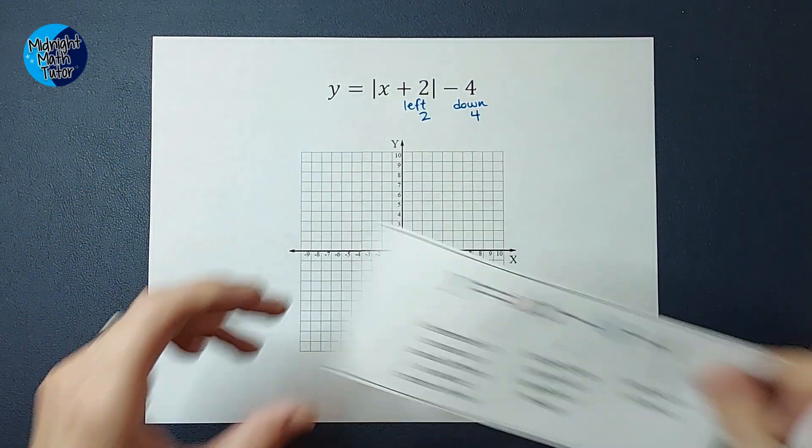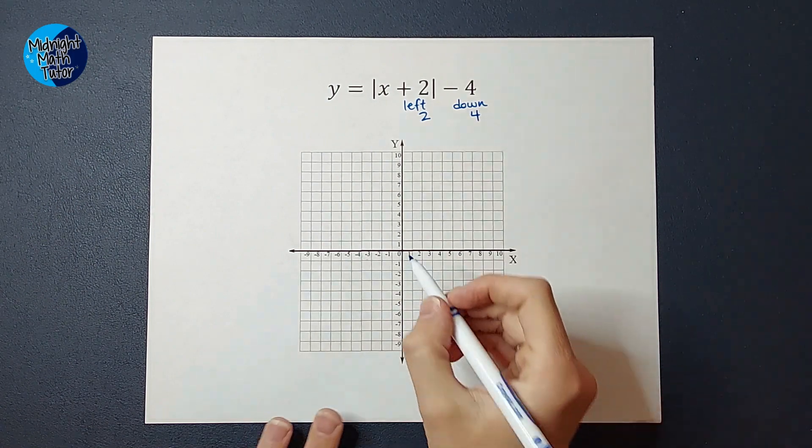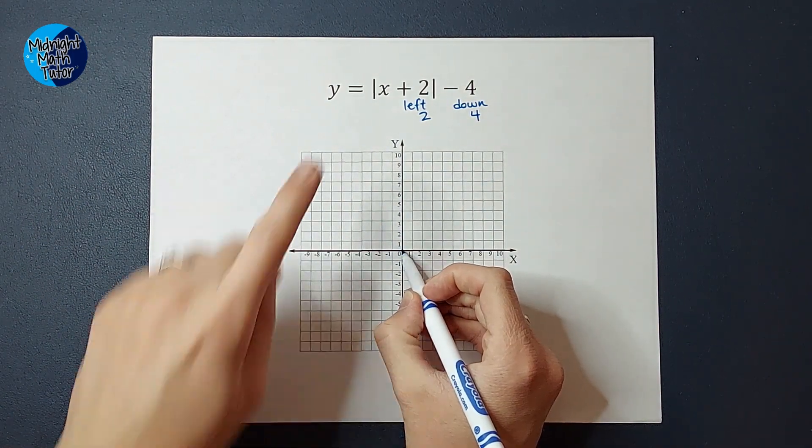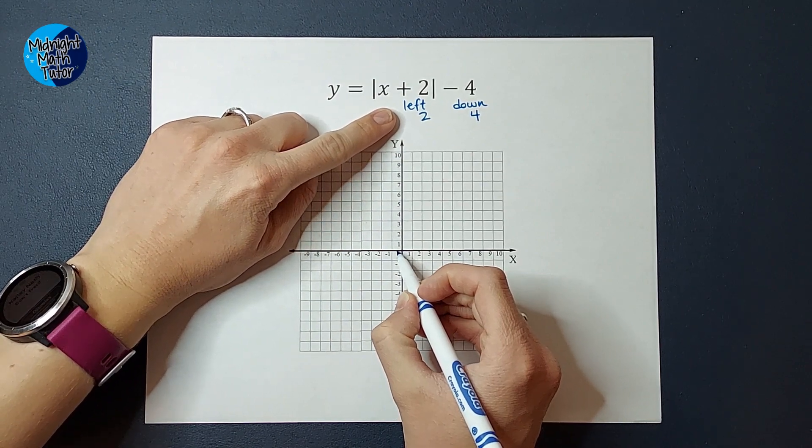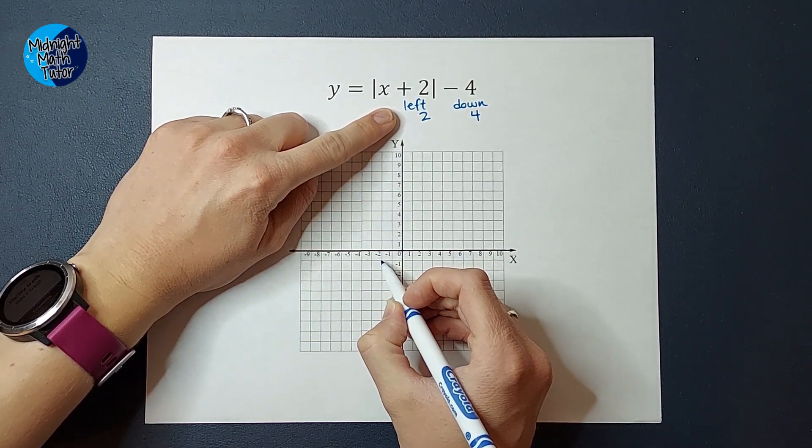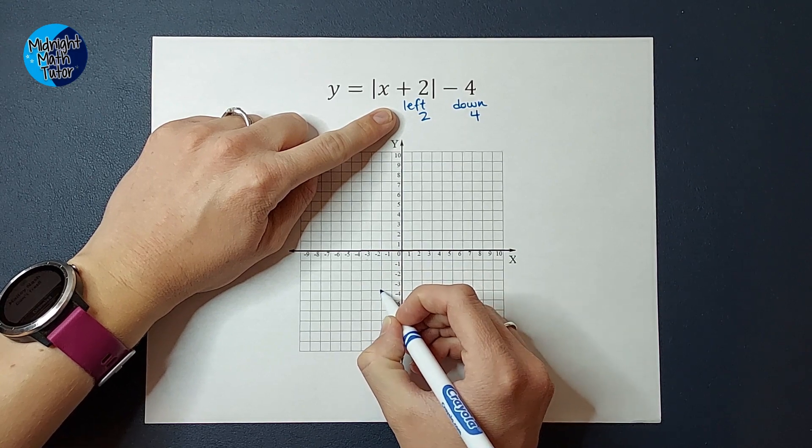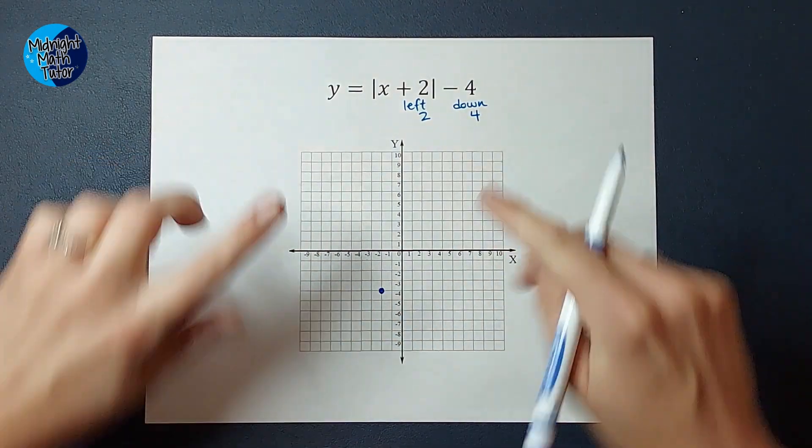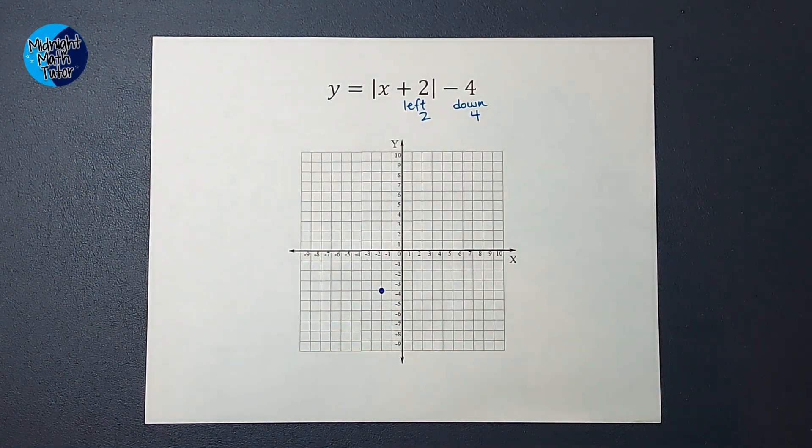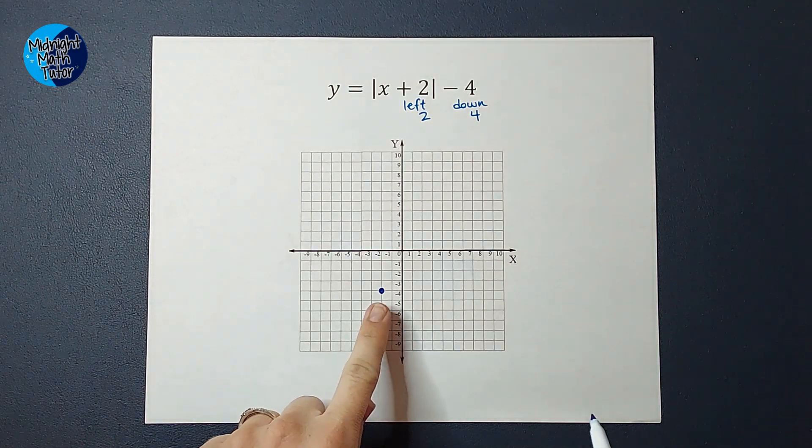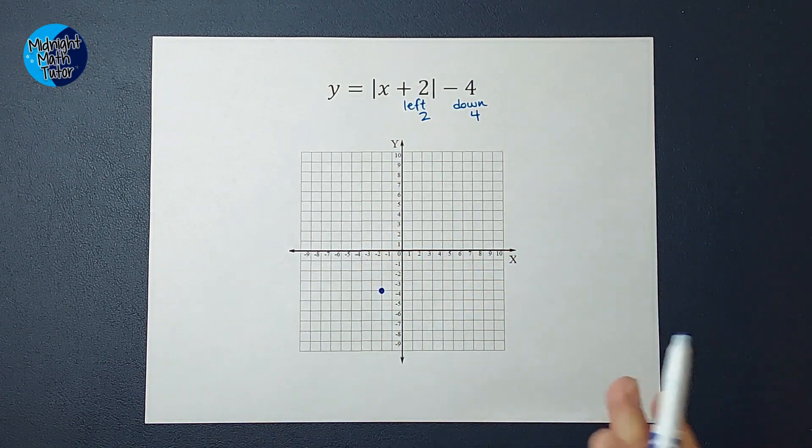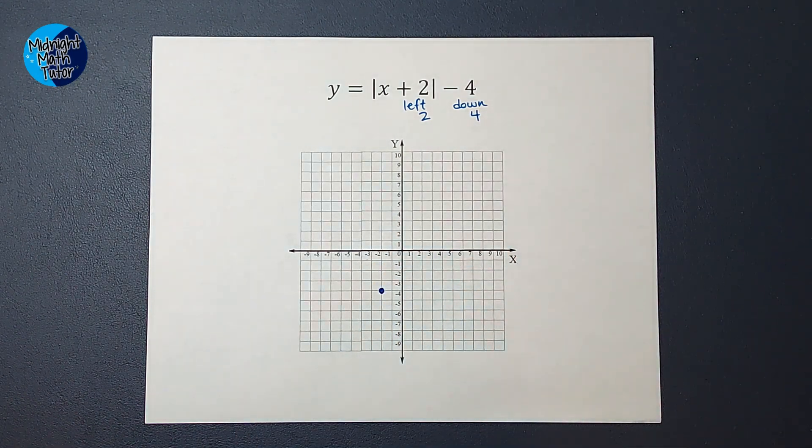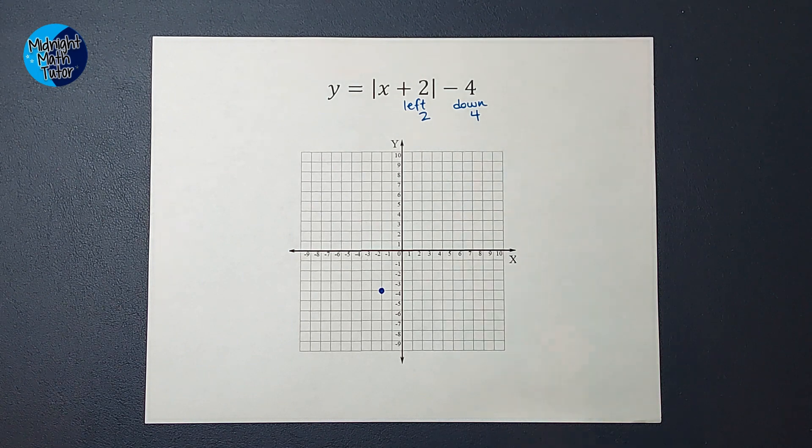All right. So let's look at this now. My parent graph starts at zero, zero. But I just figured out that this graph is going to be shifted to the left two and down one, two, three, four. So that is my new vertex. It's going to open up as a V. Now here will kind of depend on your teacher. So some teachers at this point probably just want to know that you know where the vertex goes and that it opens up. So maybe you're done if that's all your teacher wants. If your teacher wants to have some more points, that's what we're going to do right now.